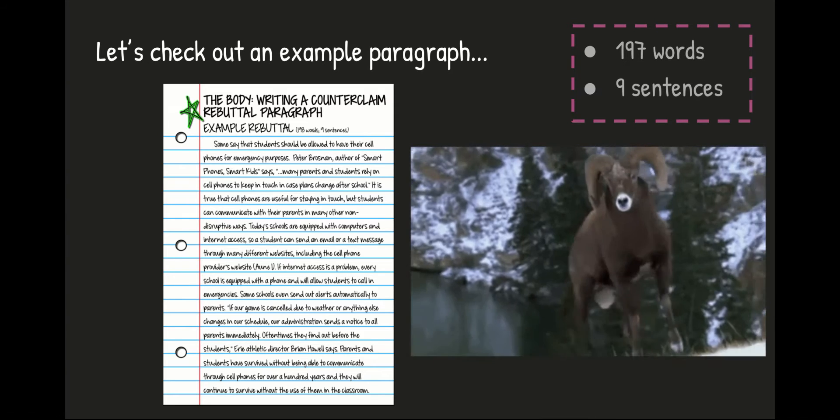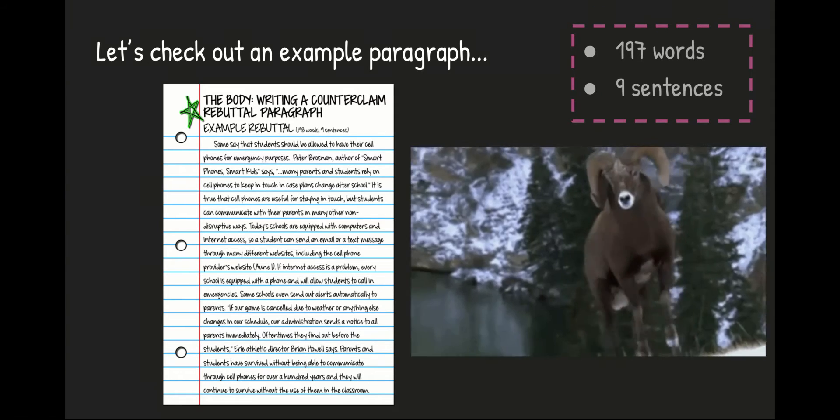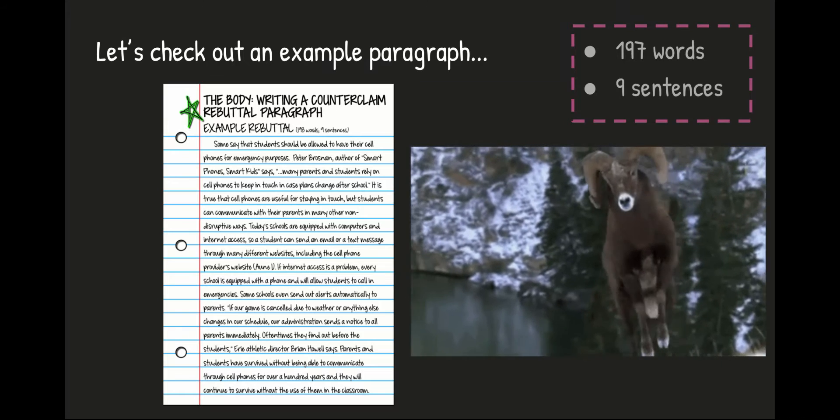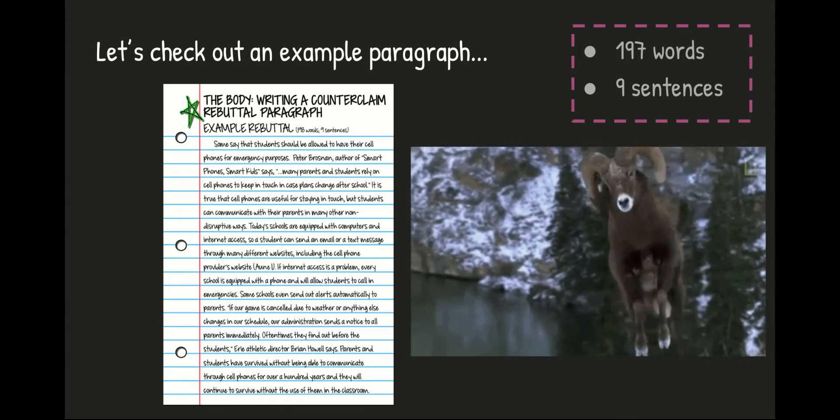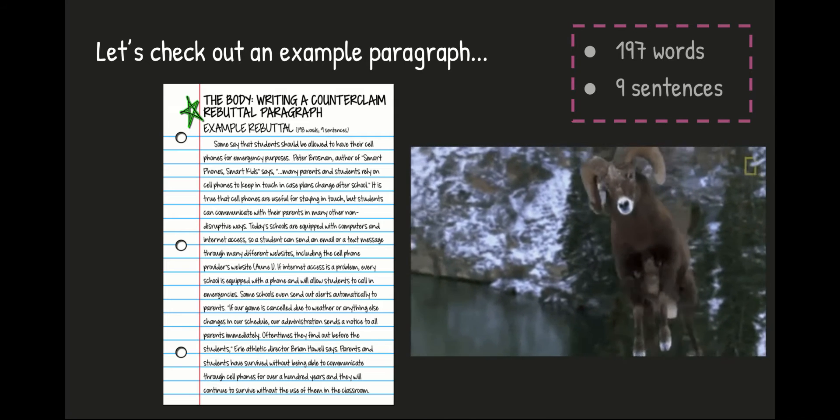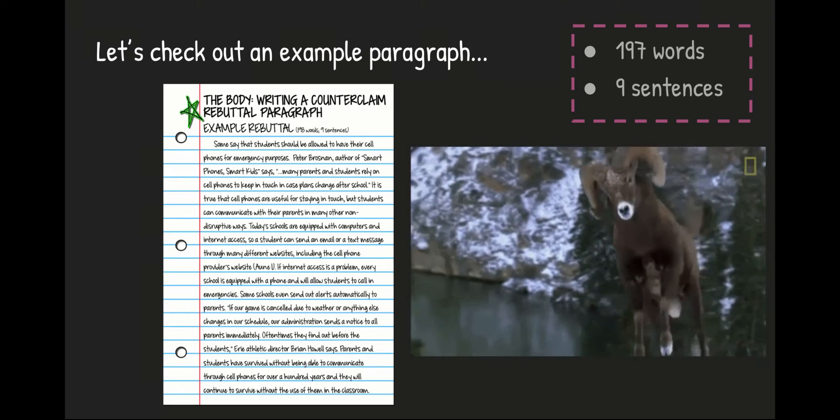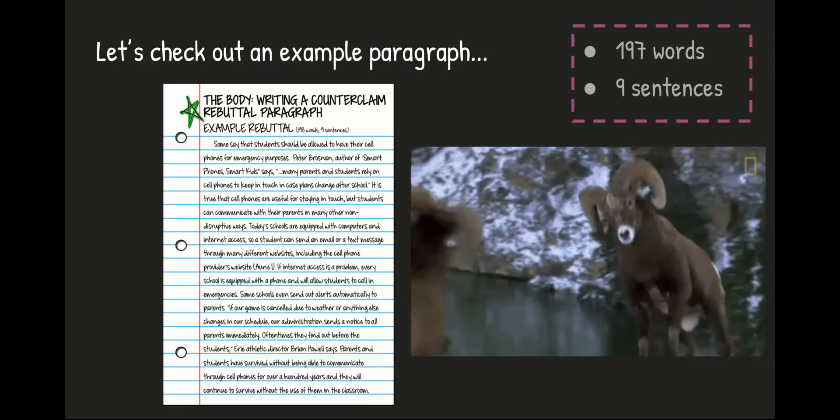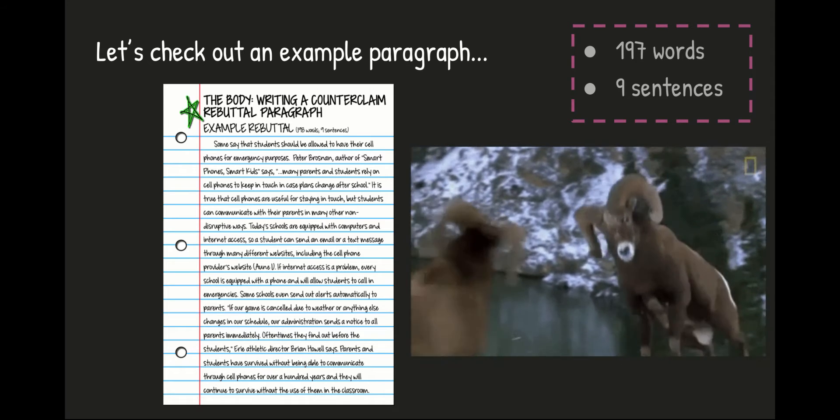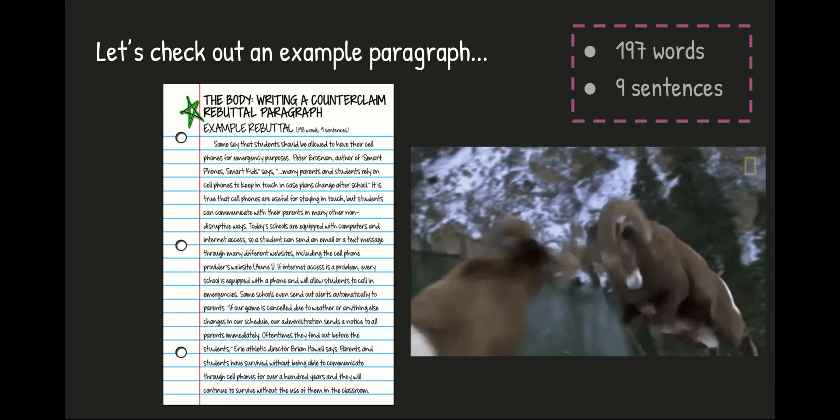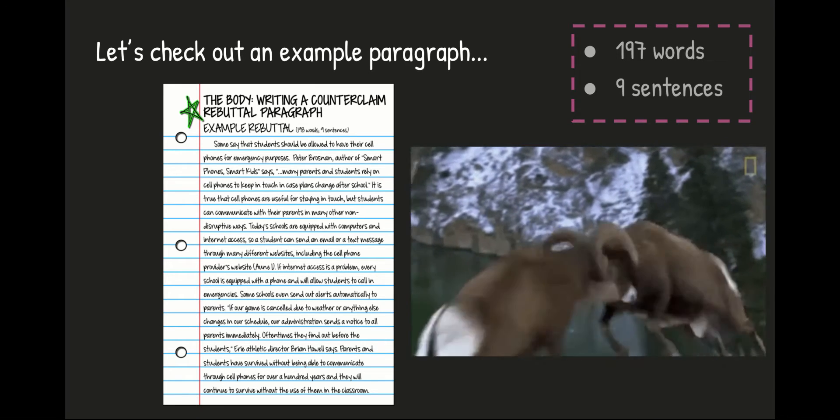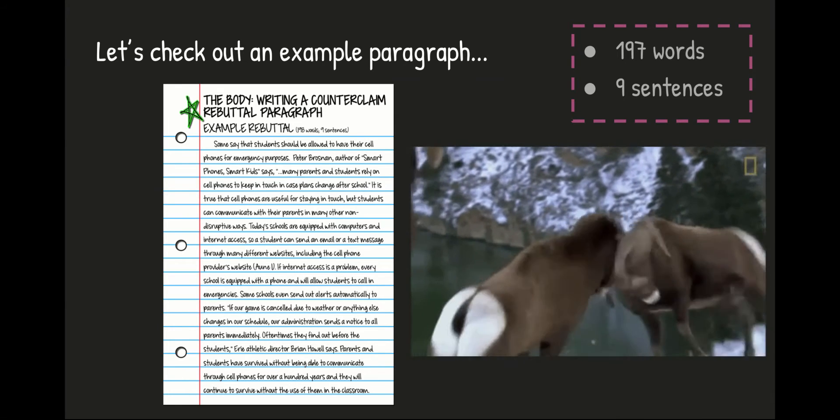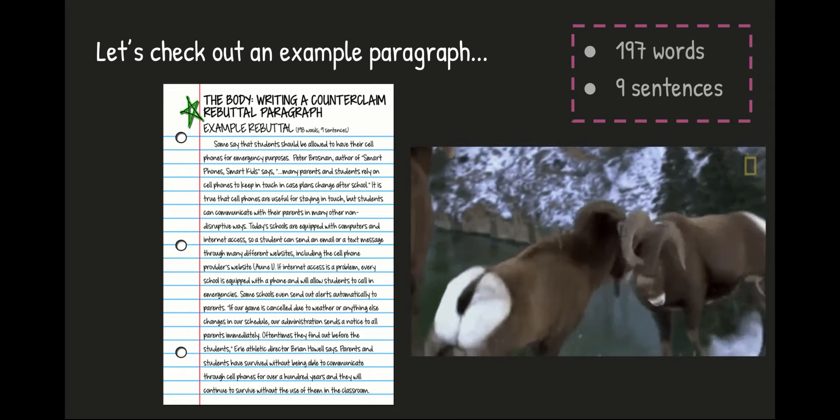Next line. It is true that cell phones are useful for staying in touch, but students can communicate with their parents in many other non-disruptive ways. Circle the word but right there. But students can communicate. So what I'm doing right there is I am acknowledging what the other side says by saying it is true that cell phones are useful for staying in touch. I'm not going to argue that point. The transition to the rebuttal starts with the word but. Students can communicate with their parents in many other non-disruptive ways. That is my rebuttal. That is the argument that I am willing to take on right here, right now. And then I roll into an internal citation.